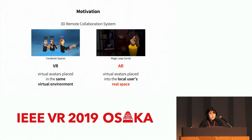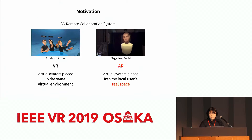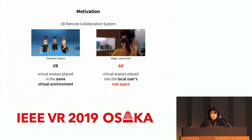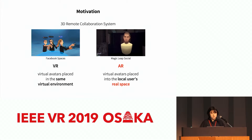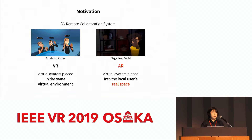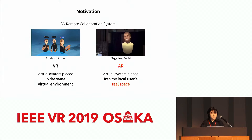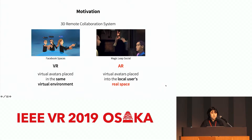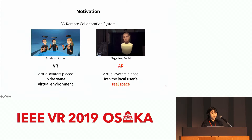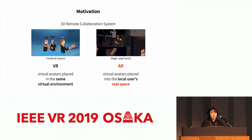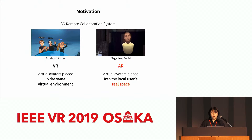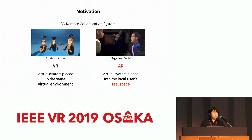In recent decades, remote collaboration systems have developed from 2D video-based to 3D-based systems. The goal of those 3D remote collaboration systems is to enable remote users to collaborate together as easily as if they were in the same space. Social VR platforms, such as Facebook Spaces, use avatars placed in the same virtual environment to support social activities. An AI collaboration service, like Magic Live Social, places an avatar of remote users into a local user's VR space.